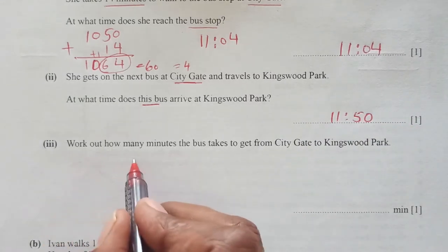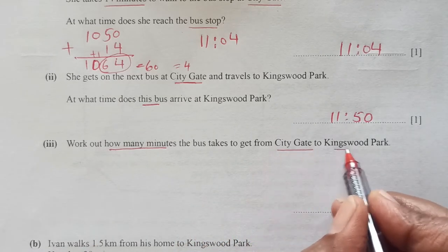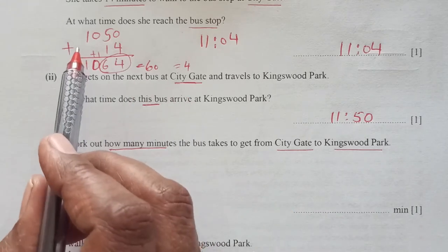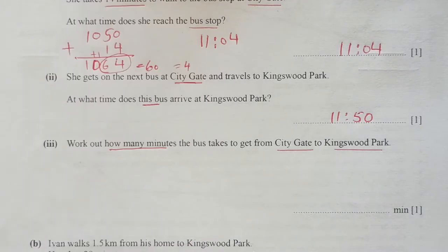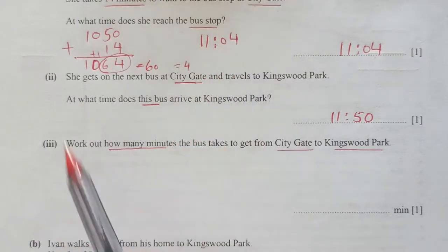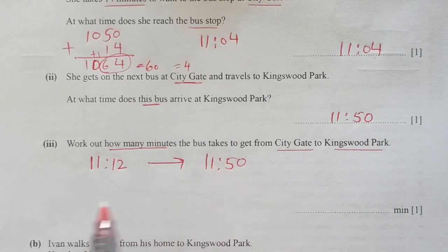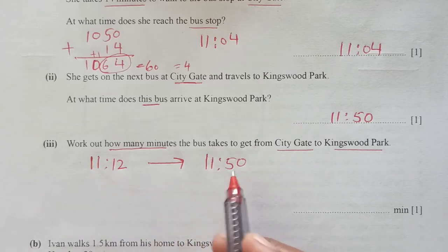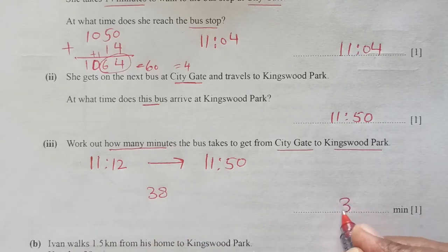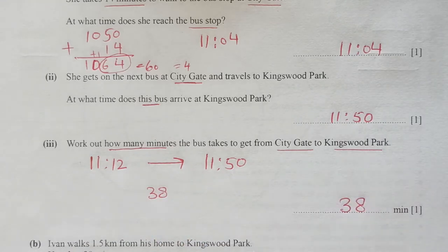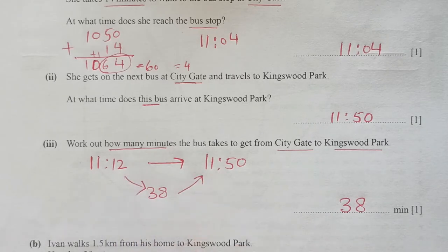Number 3: Work out how many minutes the bus takes to get from City Gate to Kingswood Park. The bus started at 11:12 and arrived at 11:50, so we need the time from 11:12 to 11:50. That is 50 minus 12, which is 38 minutes. So the final answer is 38 minutes.